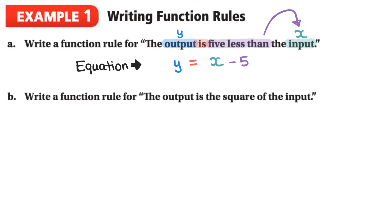In the next one we have the function rule the output is the square of the input. So again the output Y is equal the square of so we need a small exponent of 2 and it's a square of the input so we need the square on the input and the input is X. And we get the equation Y is equal to X squared.